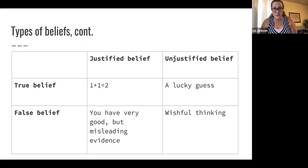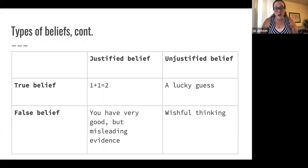Finally, you can have unjustified false beliefs, like a belief based on wishful thinking. If the forecast predicts a 90% chance of rain tomorrow but you have a picnic planned, so you just refuse to believe it's going to rain, and then it actually does rain — your belief that it's not going to rain would be both false and unjustified. So those are the four different kinds of beliefs.